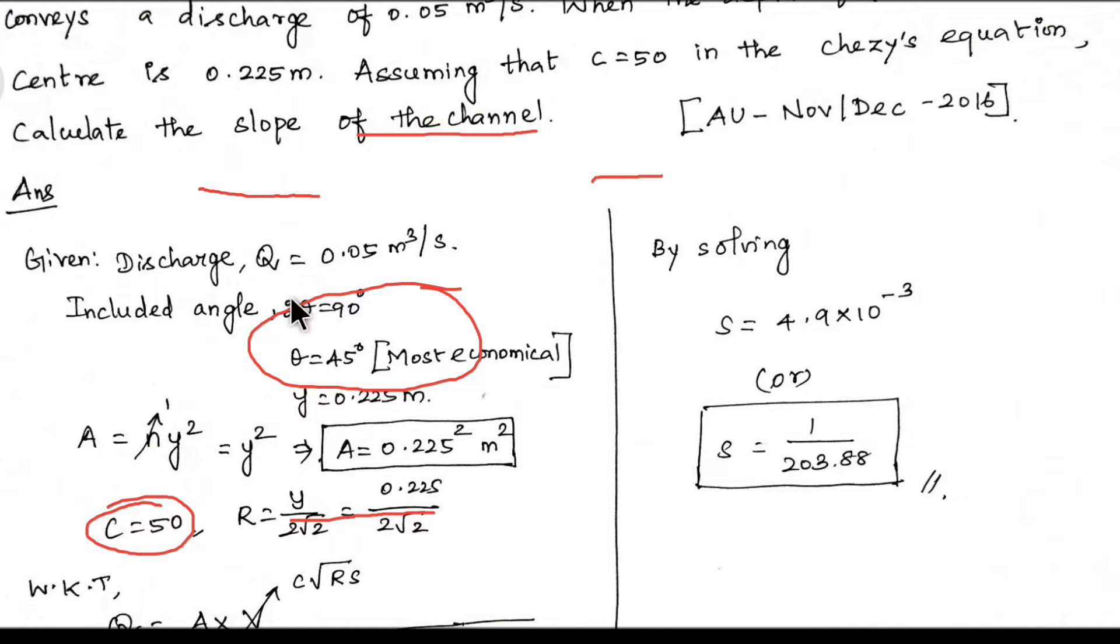c equal to 50 in the Chezy's equation. Calculate the slope of the channel. Slope of the channel is S₀ value.